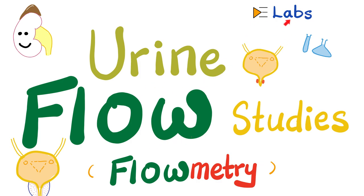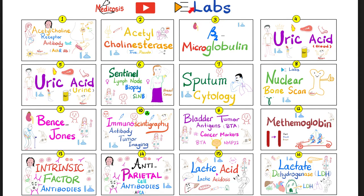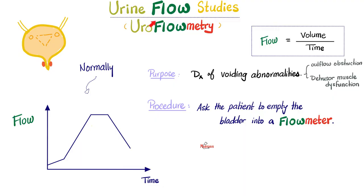Why measure the flow of urine? Because it can help diagnose many conditions, including diseases of the detrusor muscle of the bladder and problems with the urethra including obstruction. The basic idea behind urodynamic studies is to diagnose voiding abnormalities, such as problems in the bladder muscle (the detrusor) or outflow obstruction.